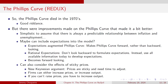But improvements were made on the Phillips curve that made it better. It would be simplistic to assume there's always a predictable relationship between inflation and unemployment. What about including expectations in the model? That aggregate supply-esque specification I showed you is what's known as an expectations-augmented Phillips curve. It makes the Phillips curve forward-looking rather than backward-looking.